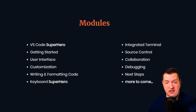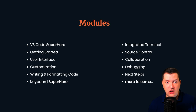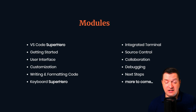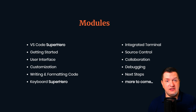Next is the integrated terminal. Some are scared by the terminal, but I'll show you how to use it to help you code more efficiently. Then we have source control — I'll go over the basic git commands, and VS Code has GitHub integration built in, so we'll go over that as well. Next is collaboration: if you're working on something and can't figure it out, you can give someone a link and they can access your local environment and help you out. The next section is debugging, which gets overlooked a lot, but VS Code has great debugging capabilities.